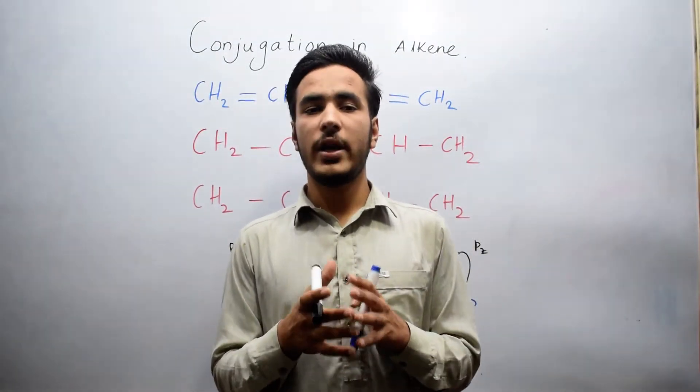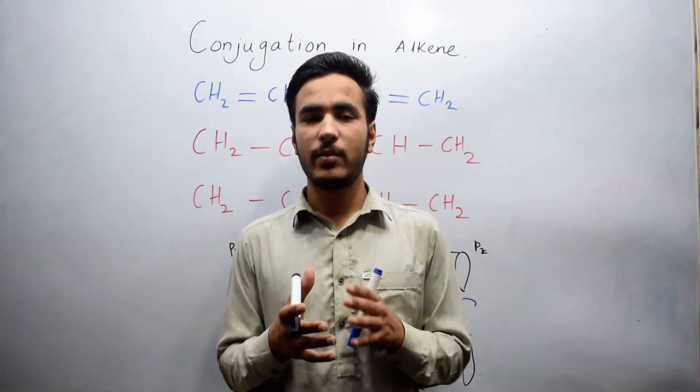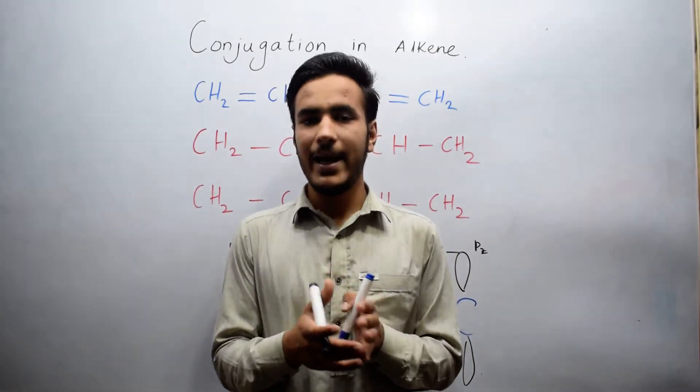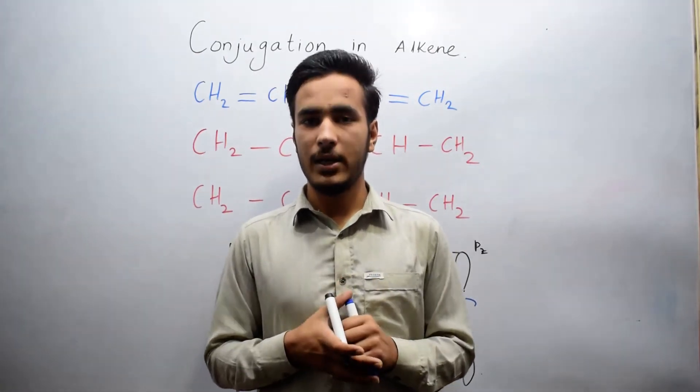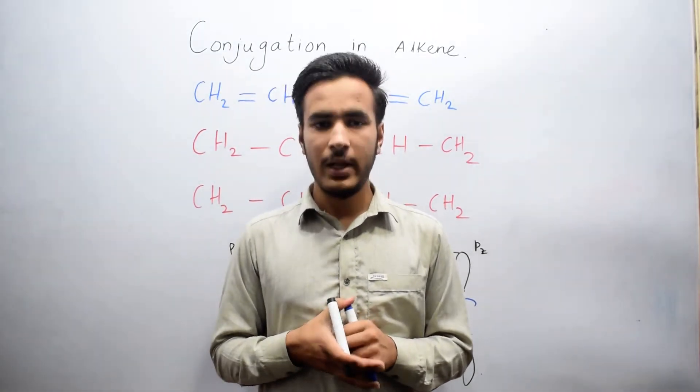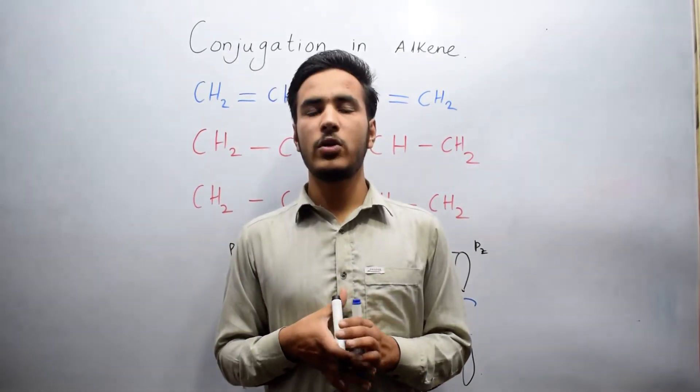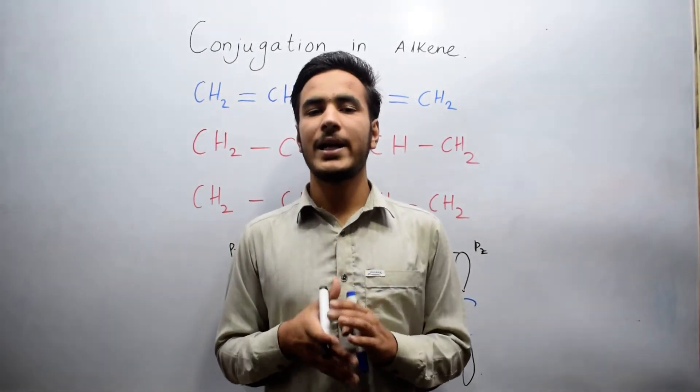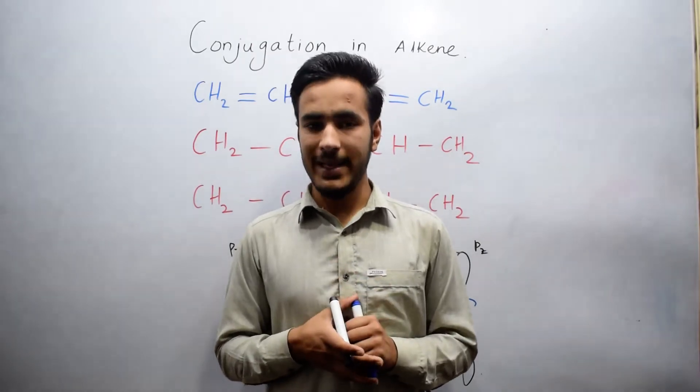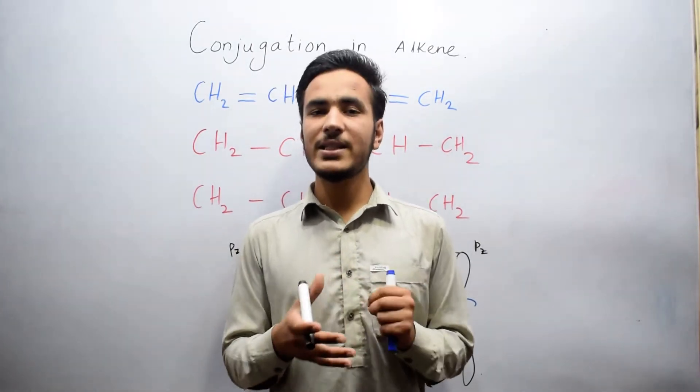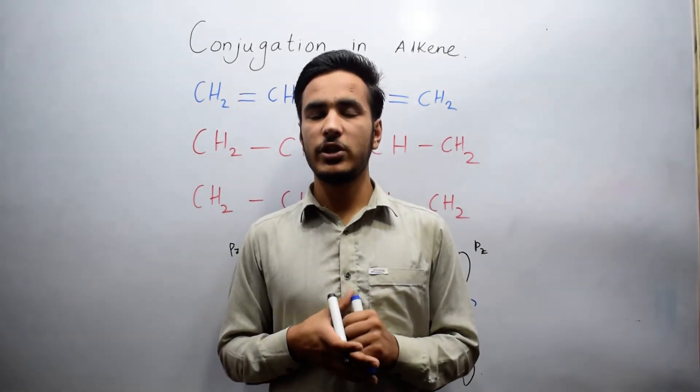Compounds in which carbon atoms are linked by alternating single and double bonds are known as conjugated compounds. In such conjugated compounds, the delocalization of pi electrons of double bonds takes place. This means that pi electrons continuously change their position.